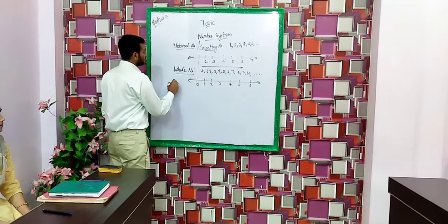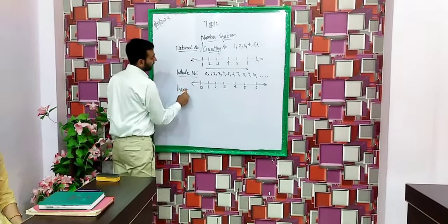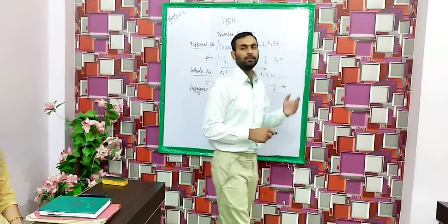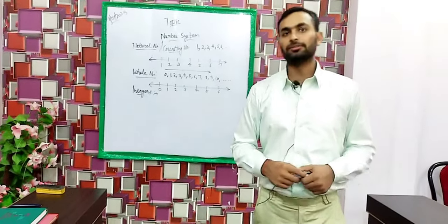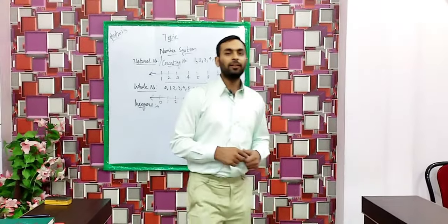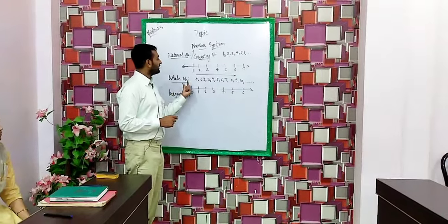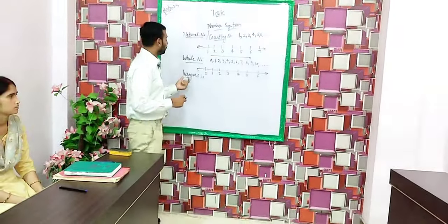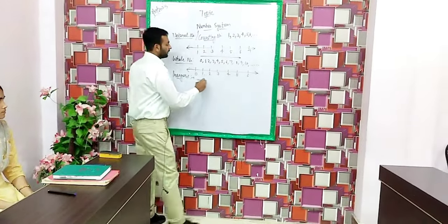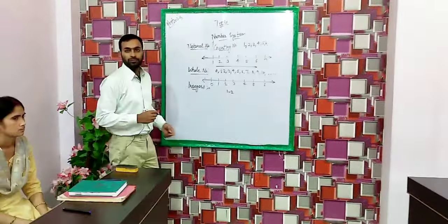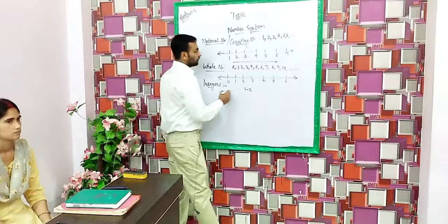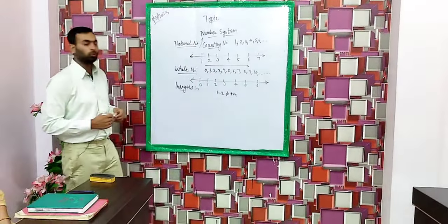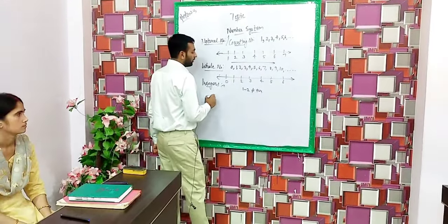Now coming to the next number type — integers. Why do we need integers when we already have natural numbers and whole numbers? Children, when we subtract a larger number from a smaller number, our result is a negative number, not a positive number. So we need integers. For example, 1 minus 2: here 1 is smaller and 2 is greater, so the result is not a positive integer, not a natural number, not a whole number.